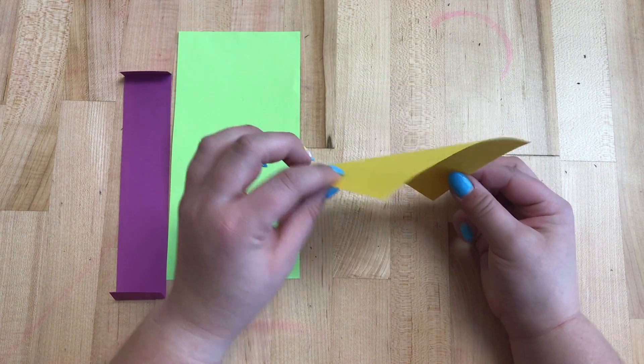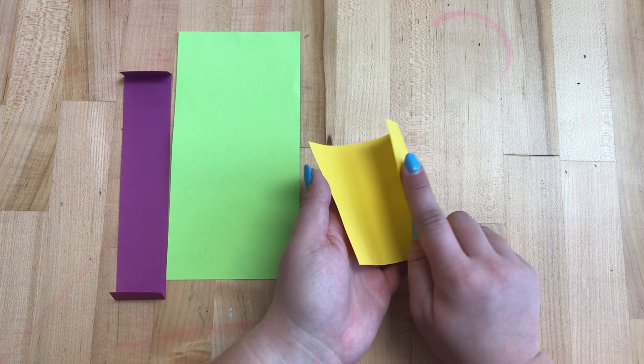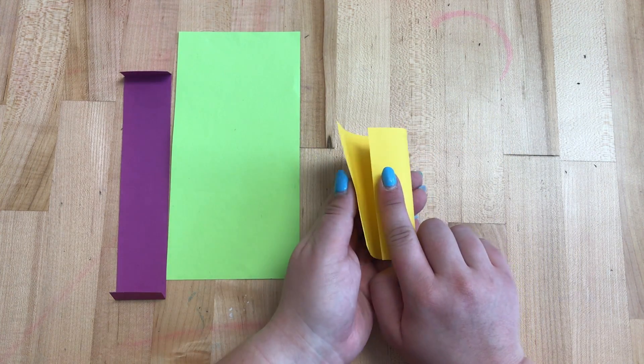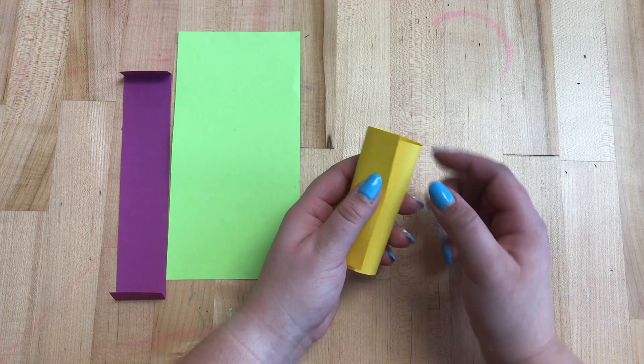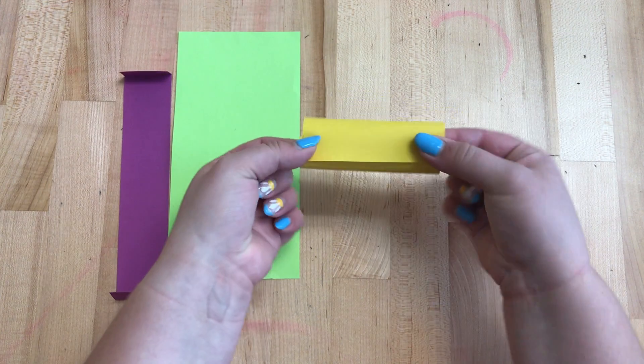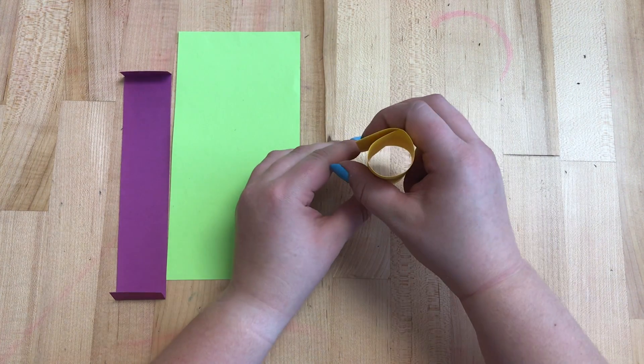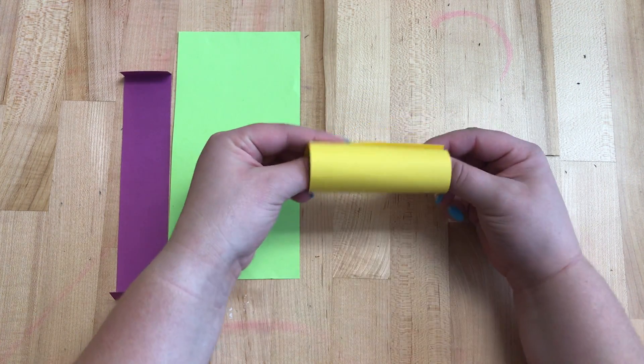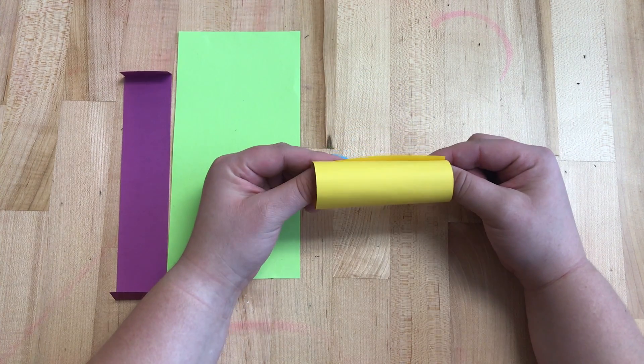So what you're going to do is take your paper, you're going to kind of curl it in like this and then put this side on top and hold that in and you have a cylinder. Why don't you go ahead and try and make that cylinder.